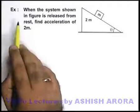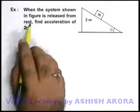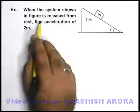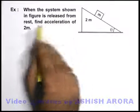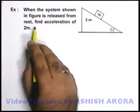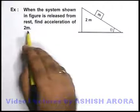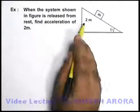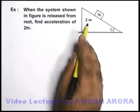In this example, we are given that when the system shown in the figure is released from rest, we are required to find the acceleration of the wedge of mass 2m.